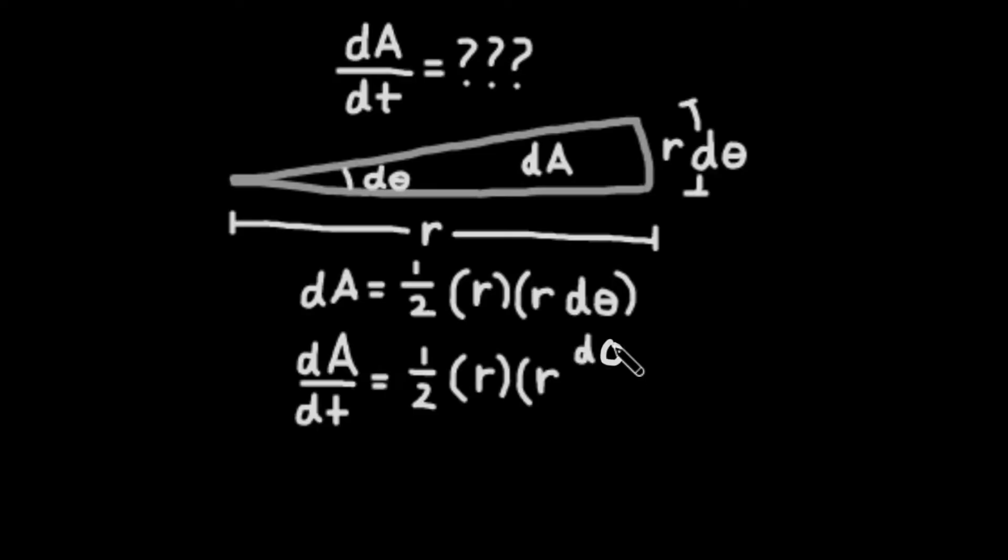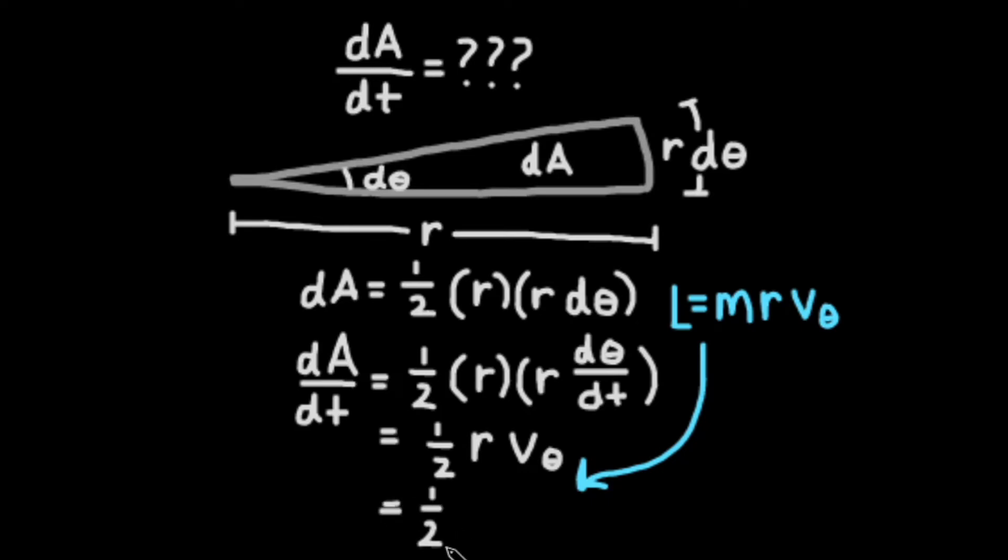If we divide dA by dt, we'll see that our sectional area is just equal to 1 half r times the velocity with respect to theta. Angular momentum is equal to the mass times the distance times the velocity, so we can rewrite dA dt as 1 half l over m.